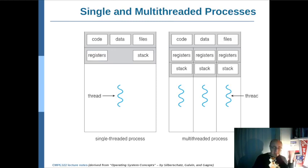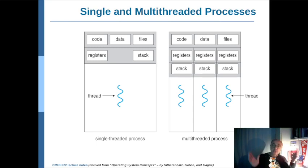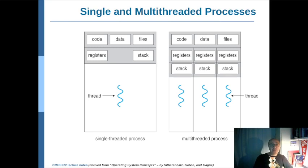This figure explains single-threaded and multi-threaded execution. In a program where you don't apply multi-threaded programming, you still have a thread — a single thread — which means statements and instructions are executing one after another with no parallelism. In that case, you have a single line of execution called the thread, and this process will have its own code, data, files, stack, and registers.